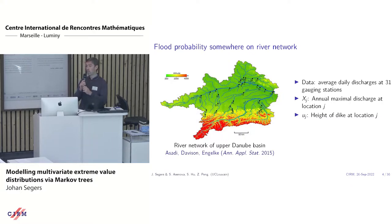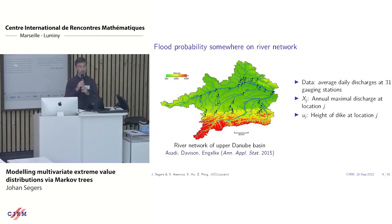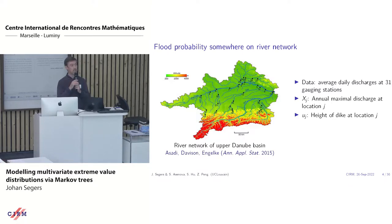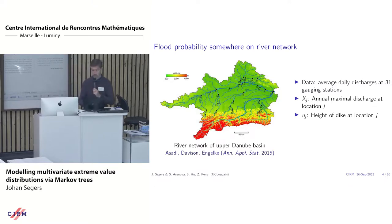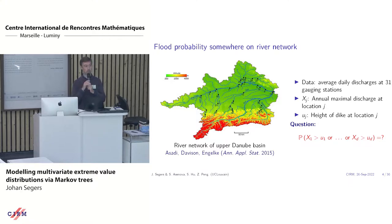This plot has been taken from a great article appearing in 2015 in the Annals of Applied Statistics, showing a part of the Danube River. You see dots on the map — they represent locations where there are measurements of water levels, specifically the amount of water that flows at that point per second. The question is: suppose that at each of those locations you have a dike of a certain height, what is the probability that at some point something will go wrong in a given year? So the question is, what is the probability that in a given year there will be an exceedance of one of those levels at one of those locations? This is a very typical question in extreme value analysis.